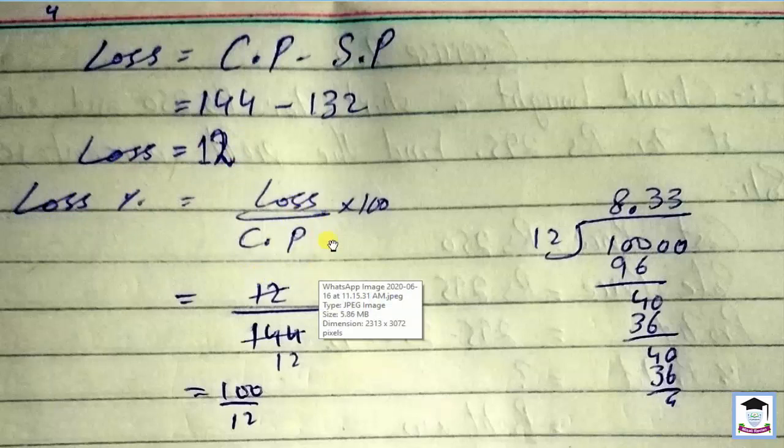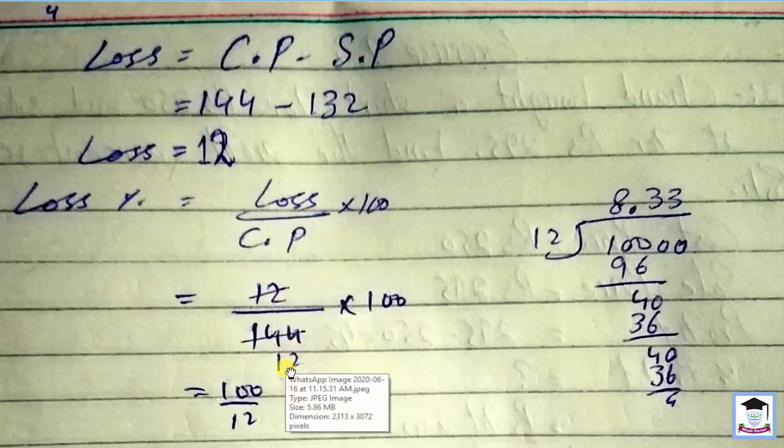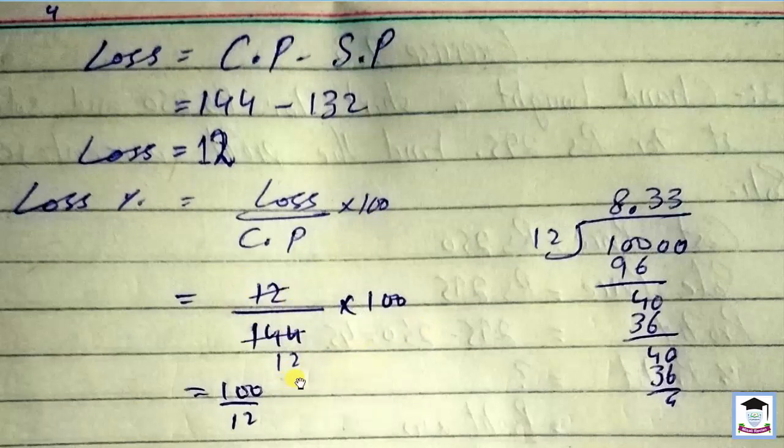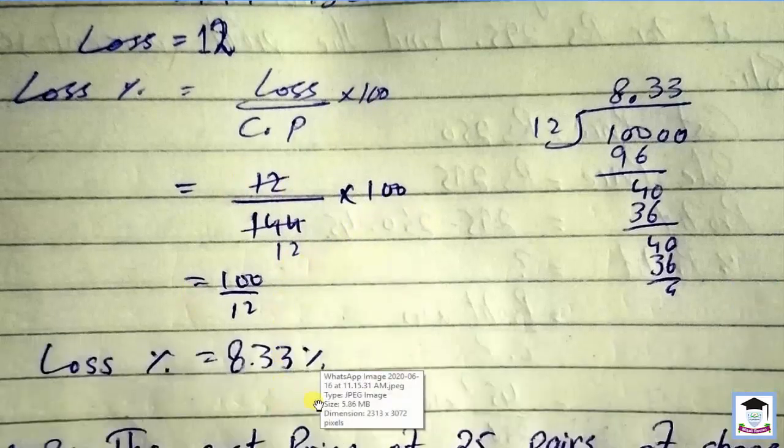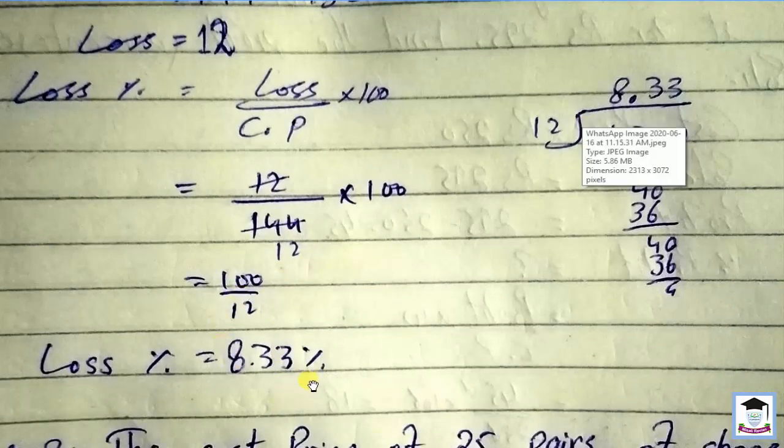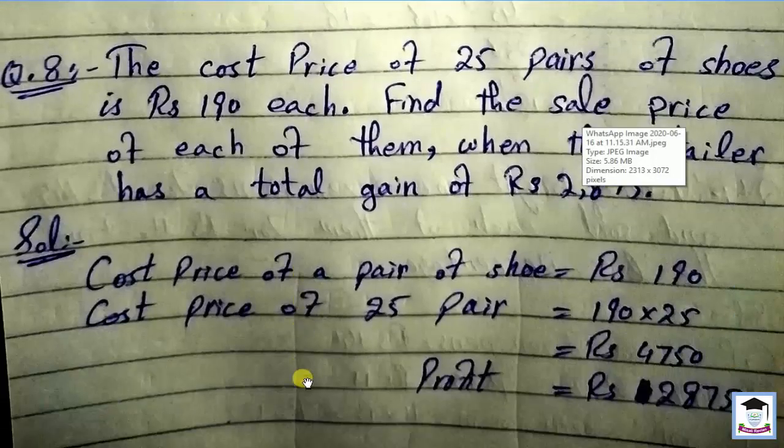Loss percentage: loss over cost price multiply by 100. So 12 over 144 times 100. Dividing gives 8.33 percent loss.